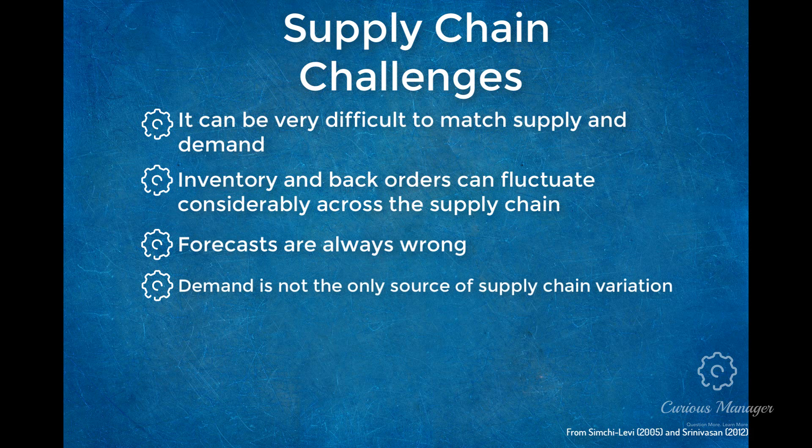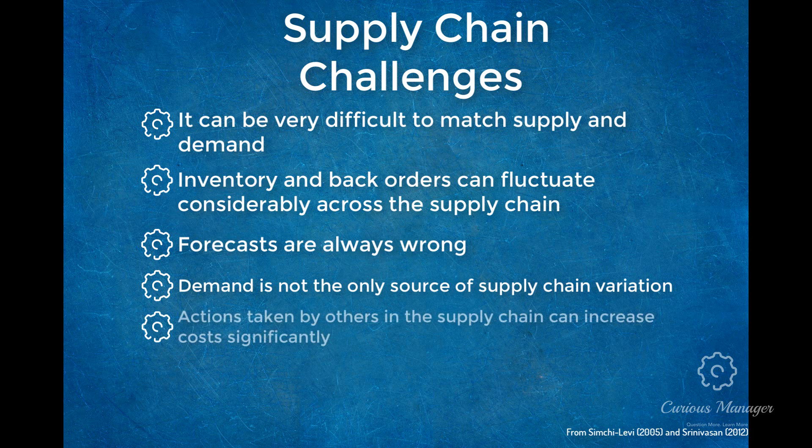Number four: demand is not the only source of supply chain variation. Variation exists in many places within the supply chain, including delivery lead times, manufacturing lead times, manufacturing yields, logistics transportation times, and demand variety. Number five: actions taken by other entities within the supply chain can increase risk significantly. For example, just-in-time manufacturing requires components to be made available with little or no variation in lead time, and this strategy can backfire if the retailer requires a sudden increase in inventory the manufacturer had not planned for, increasing costs elsewhere.